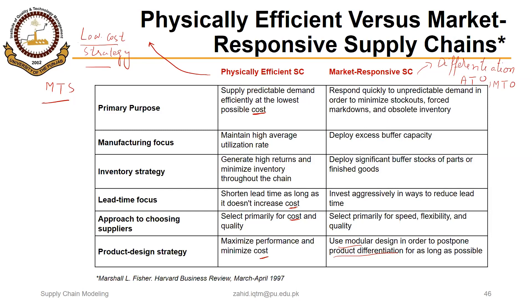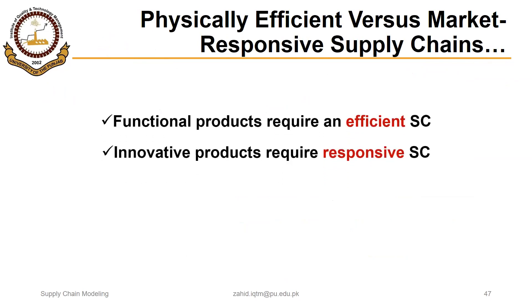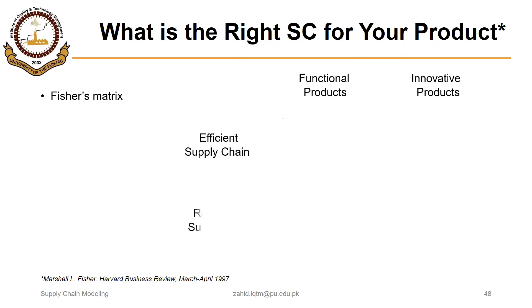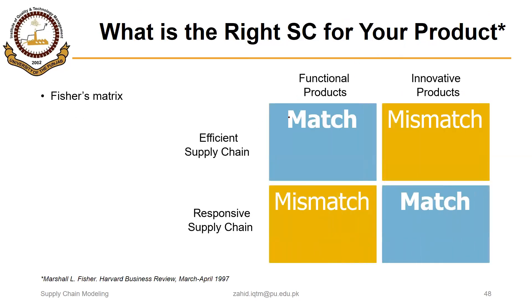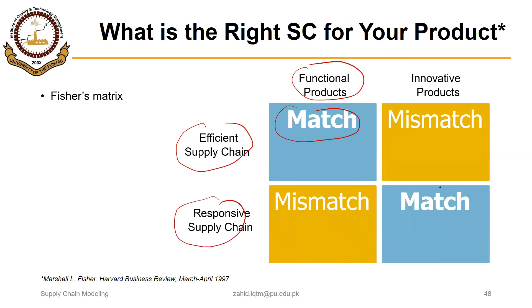You can think further about the points in the slides to link them with the concepts discussed. In summary, functional products generally require an efficient supply chain, make-to-stock production environment, and a low-cost business strategy. Innovative products require a responsive supply chain, mostly assemble-to-order and make-to-order production environments, and a differentiation strategy.